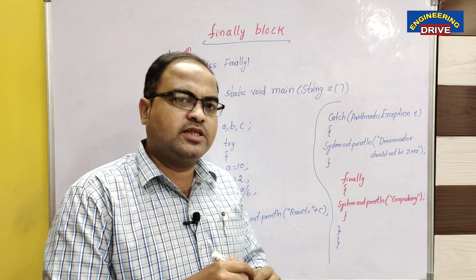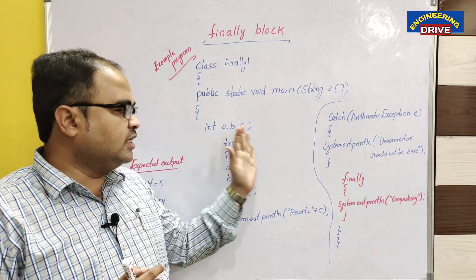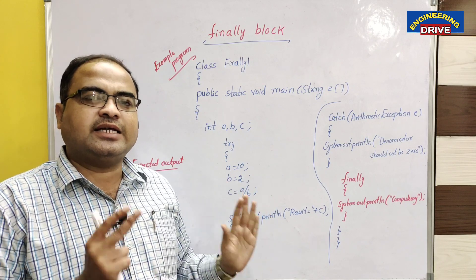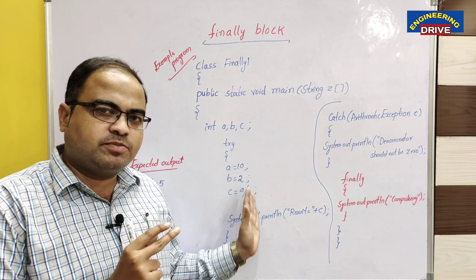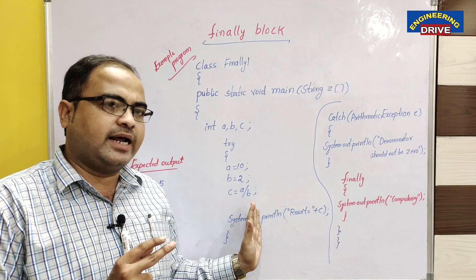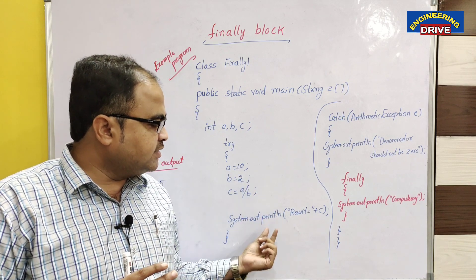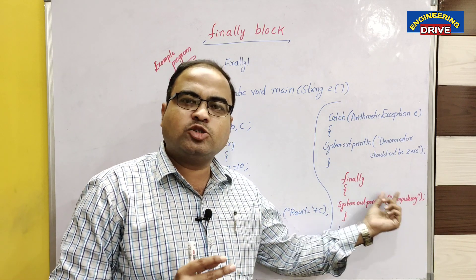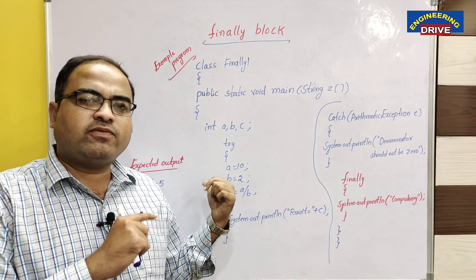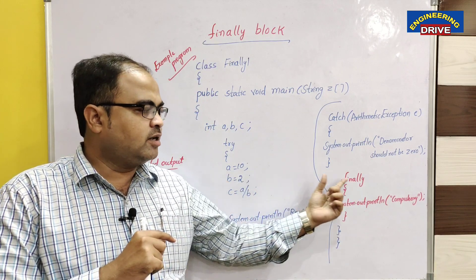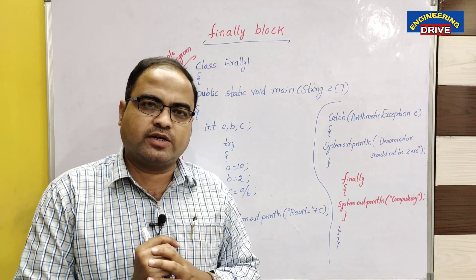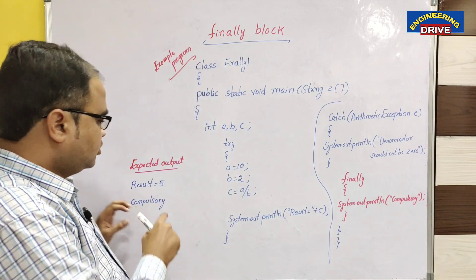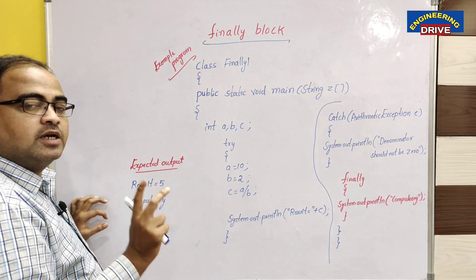So in case one there is no exception. Even though there is no exception in the try block, we got the output from the try block as well as the contents of the finally block. So in the case of no exception, the finally block is still executed. We got 'result' and 'compulsory' as output here.